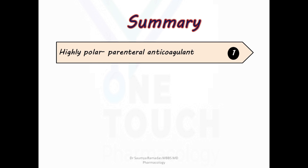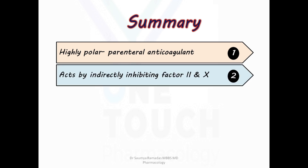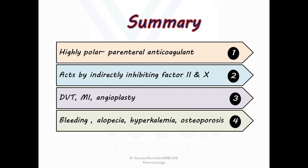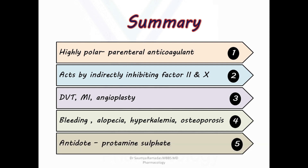To summarize: heparin is a highly polar parenteral anticoagulant. It acts indirectly by inhibiting factor IIa and factor Xa. It is used in the management of deep venous thrombosis, myocardial infarction, and coronary angioplasty. The most common adverse effects are bleeding, alopecia, hyperkalemia, and osteoporosis. The antidote to heparin is protamine sulfate.